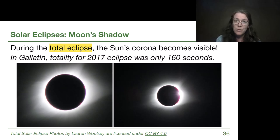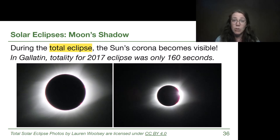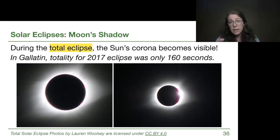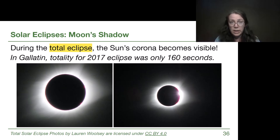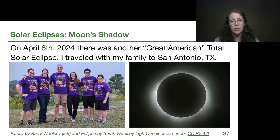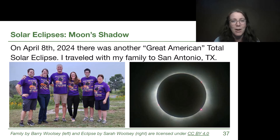Because of the hospitality of my great-aunt, we were able to see totality in Gallatin, Tennessee for almost three minutes. These two pictures are from a point-and-click camera without a filter — this is really how dark the sky looked, and it was a remarkable experience. It was so rewarding that we made a big trek yet again for the 2024 eclipse, traveling together to San Antonio, Texas. My dad got us matching t-shirts, and we had a picnic and games at a rest area along the highway, just waiting for the eclipse.